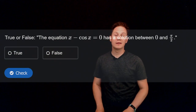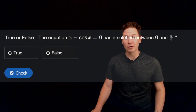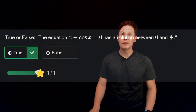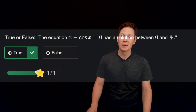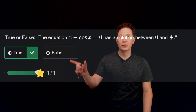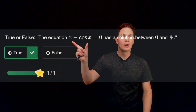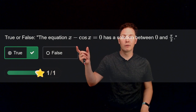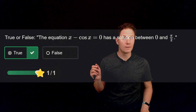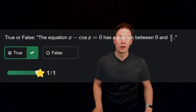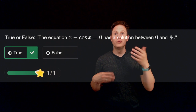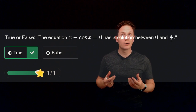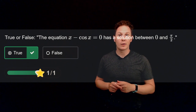Is it true or false that the equation x - cos(x) = 0 has a solution between 0 and π/2? This is true. The IVT guarantees it because the left-hand side is continuous on this closed interval, and the endpoint values have opposite signs: at x = 0 we get -1, and at x = π/2 we get π/2. Since 0 lies between -1 and π/2, it must be taken on at some point in between, so the equation has a solution.